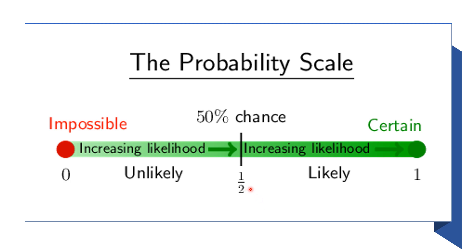As the probability of an event approaches one, that event becomes more likely to occur. As the probability of an event gets closer to zero, then that event is less likely to occur.